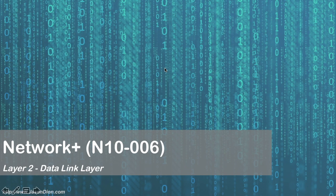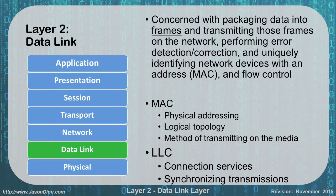So Layer 2, the Data Link Layer. What we're going to be talking about here is how we're going to package those bits into frames. We took the bits from Layer 1 — all those 1s and 0s — and packaged them together into frames and transmit those frames over the network.